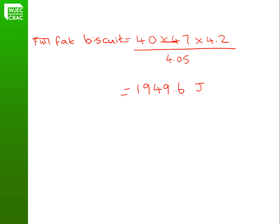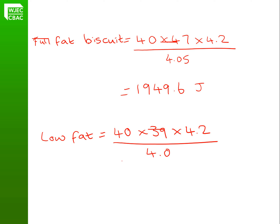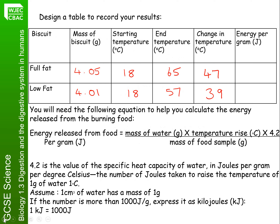If we repeat this for the low-fat: we used 40 of water, our temperature rise was 39, again times 4.2, and our mass for the low-fat biscuit was 4.01. So 40 × 39 × 4.2 ÷ 4.01 gives us 1,633.9. Going back to our table and filling in these values into the last column: energy per gram for the full-fat was 1,949.6 and for the low-fat was 1,633.9.